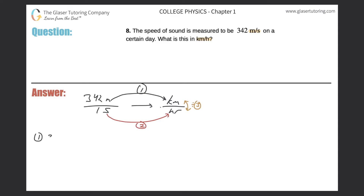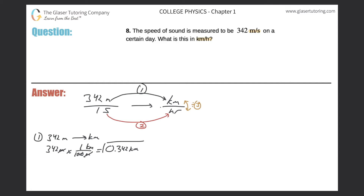Step one: convert 342 meters into kilometers. We write down 342 meters — meters go on the bottom, kilometers on the top. The relationship is that there are 1000 meters in one kilometer, so the meters cancel. We take 342 and divide by 1000, which comes out to 0.342 kilometers. That's the answer to step one.